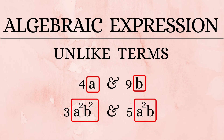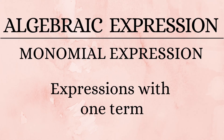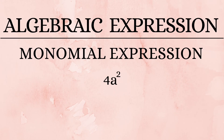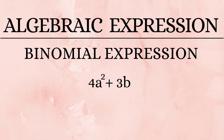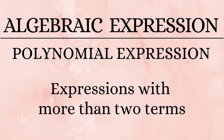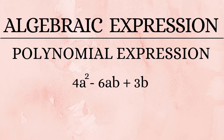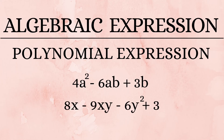Now let's understand the different types of algebraic expressions. A monomial expression involves only one term — for example, '4a squared' or '9xy.' A binomial expression has two terms added or subtracted — for example, '4a squared plus 3b' or '8x minus 9xy.' Finally, a polynomial expression has more than two terms — for example, '4a squared minus 6ab plus 3b,' and '8x minus 9xy minus 6y squared plus 3' are both polynomial expressions.